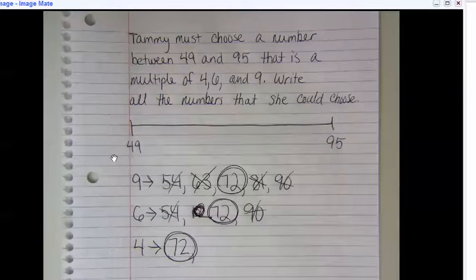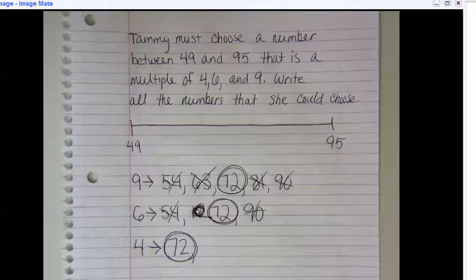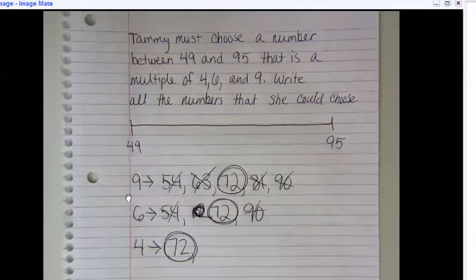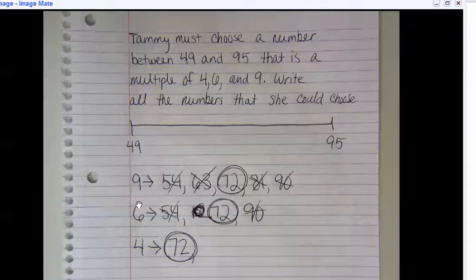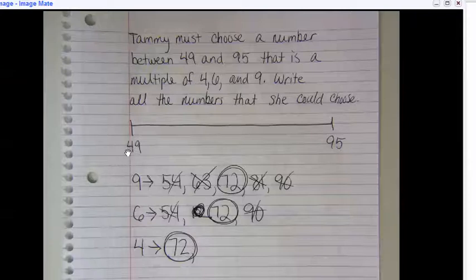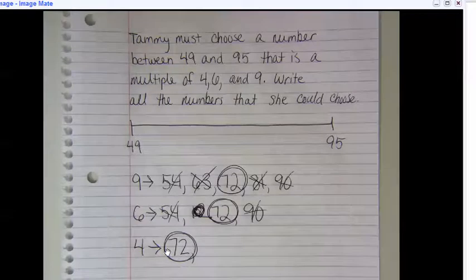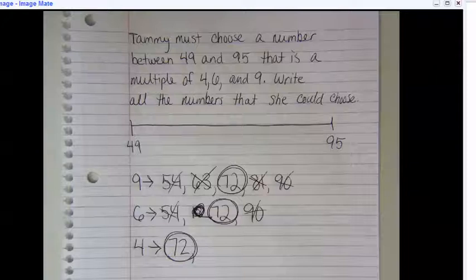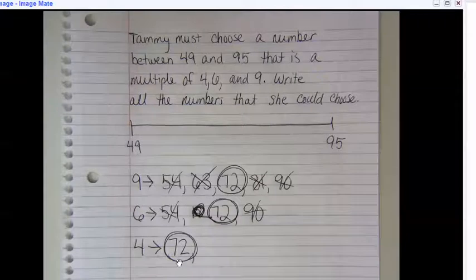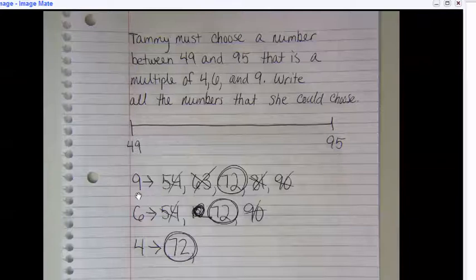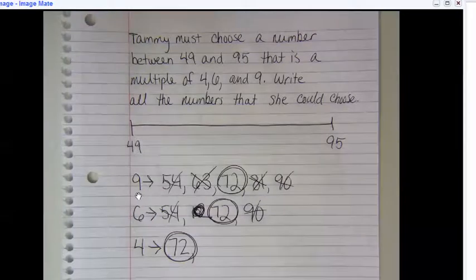When I do these kinds of problems, I just put a number line on here just to have as a visual. And then I start with the multiples of the largest number first, not the smallest one. If I started with the smallest one, four, for all the multiples that fall between 49 and 95, I'd have a huge list. It would be like 52, 56, and so on. The multiples for four would be really, really long.